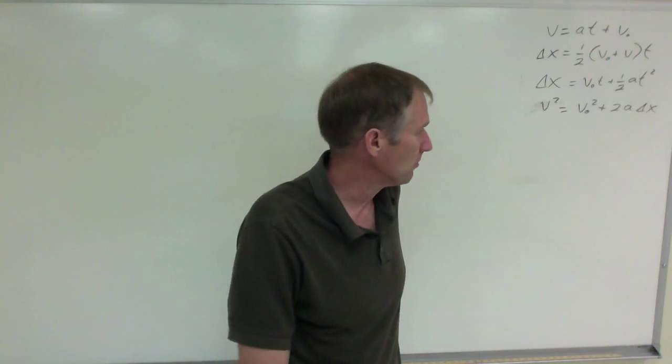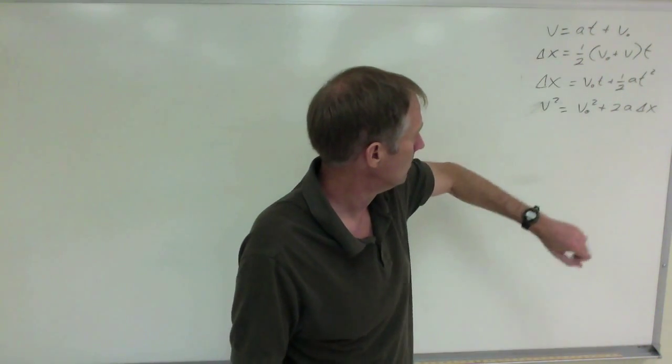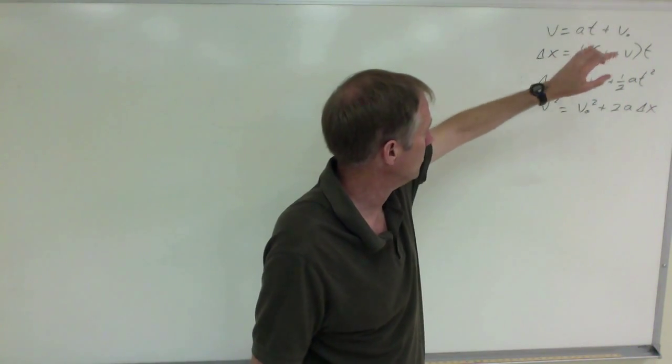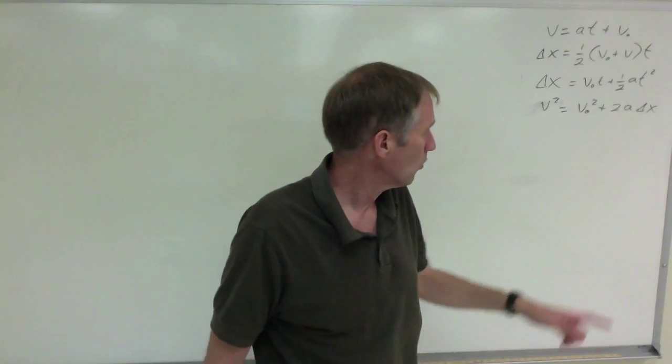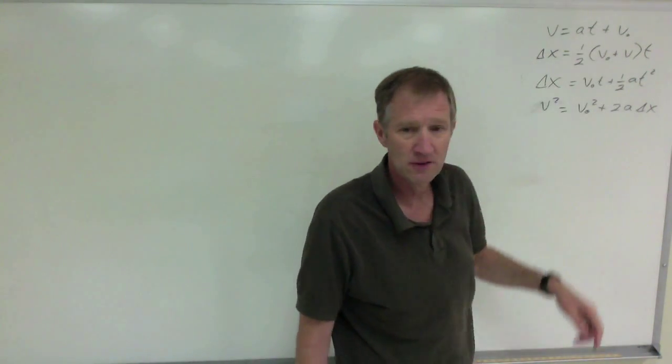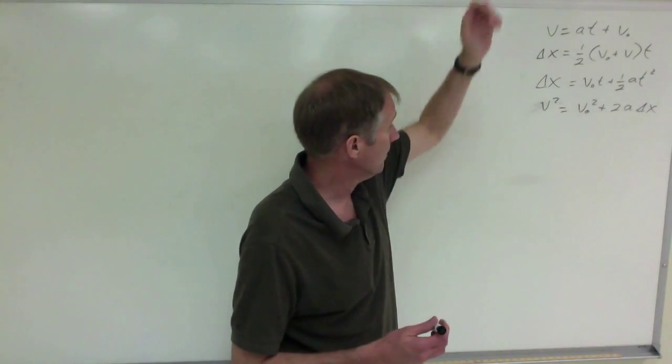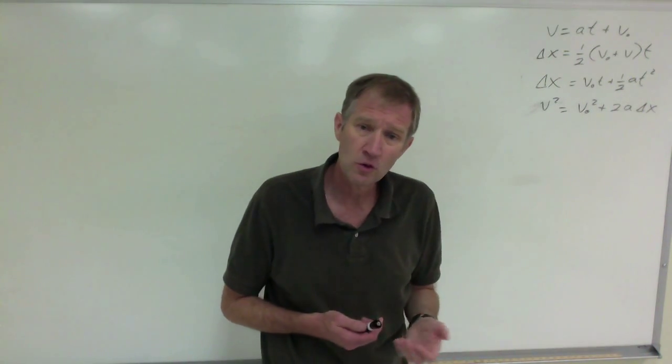Then the last one is v squared equals v sub zero squared plus two a delta x. Again, these are your kinematic equations for uniform acceleration. Kinematics, meaning the study of motion. These describe motion, the relationship between velocity, acceleration, time, and position when the acceleration is constant. Why are there four of them? They're all related. It just depends on what you know and what you're looking for.